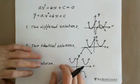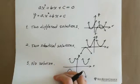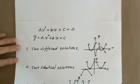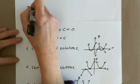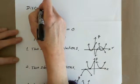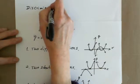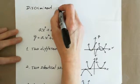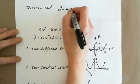Next, I'll show you how we can predict. That's why there is what we call the discriminant, which is b squared minus 4ac.